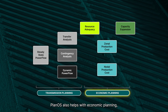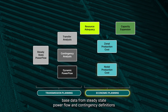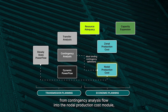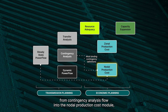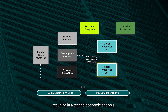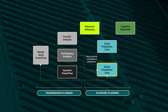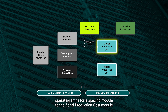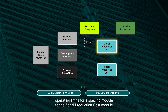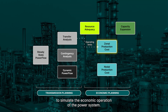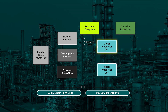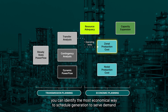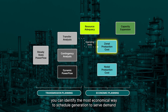PlanOS also helps with economic planning. Base data from Steady-State Power Flow and Contingency Definitions from Contingency Analysis flow into the nodal production cost module, resulting in a techno-economic analysis. The Transfer Analysis module sends operating limits for a specific module to the zonal production cost module to simulate the economic operation of the power system. Given the limitations of your transmission system, you can identify the most economical way to schedule generation to serve demand.